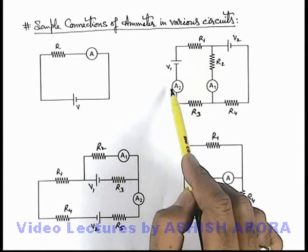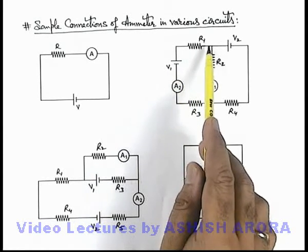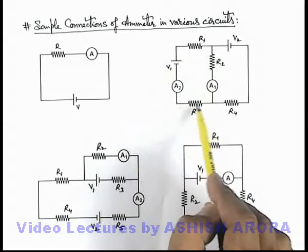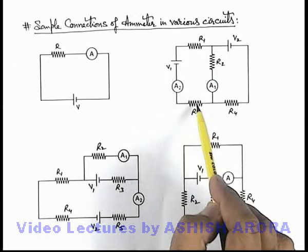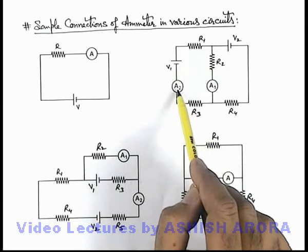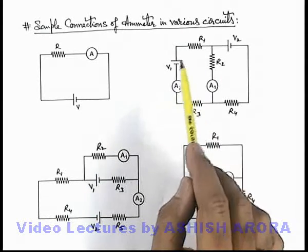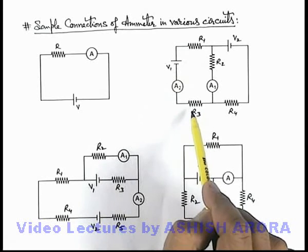And we know well, and you should always remember this also, that in a branch no matter what number of devices are connected, when a current passes through all devices the current remains same. So the reading of A2 will be the current flowing through R1, passing through V1 as well as flowing through R3.